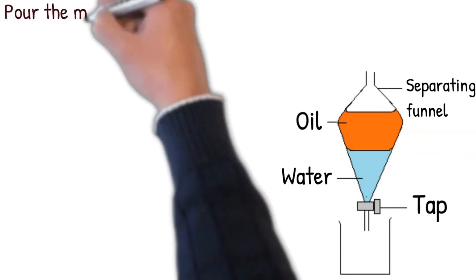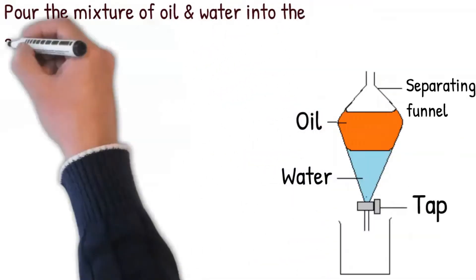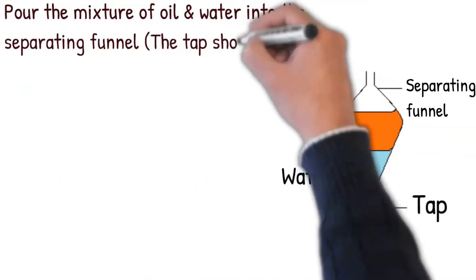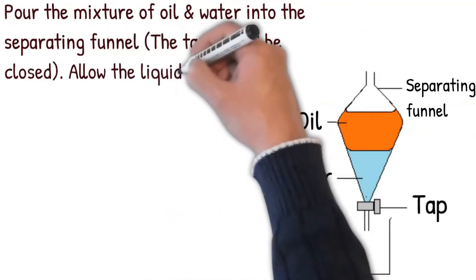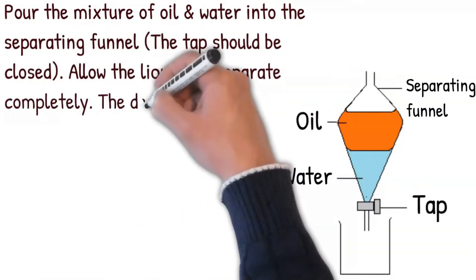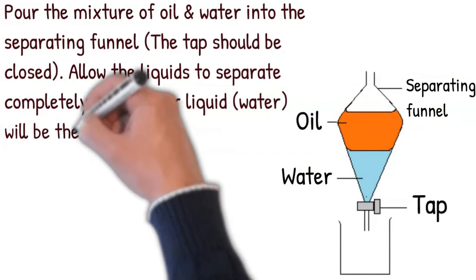Pour the mixture of oil and water into the separating funnel. The tap should be closed. Allow the liquids to separate completely. The denser liquid, water, will be the bottom layer.